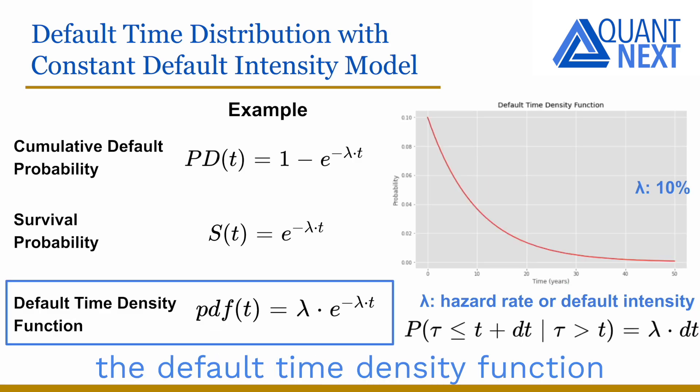If we plot this time the default time density function, still assuming a constant default intensity, we see that it is a decreasing function of time, which makes sense as the survival probability decreases with time. However, the conditional probability of default between t and t plus dt in this framework remains constant equal to lambda times dt.